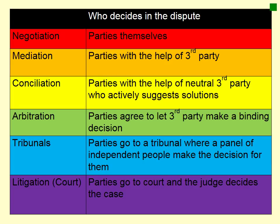I've split up the types of alternative dispute resolution and also added in court at the bottom, based on who decides the dispute. The top four categories are traditional dispute resolution methods: negotiation where the parties themselves decide; mediation where the parties decide but with the help of a third party; conciliation where the parties decide with more active help from a third party who makes suggestions; and arbitration where the parties agree to allow a third party to make the binding decision. Those are the main dispute resolution methods alternative to court.